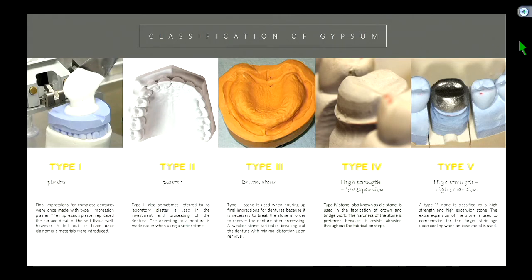If there's one thing I'll test you on, it's going to be that. Type 4 and 5 is what we typically use for crown and bridge work because it's harder. Why is it beneficial to use the hardest stone? Think about the process of making a crown — how many times are you taking something off the die or checking contacts? You want a stone that resists abrasion and won't wear very much.